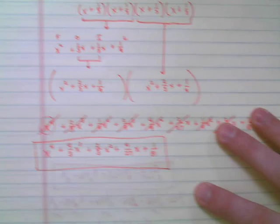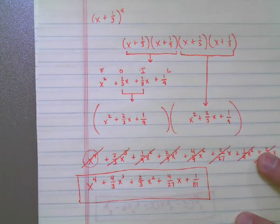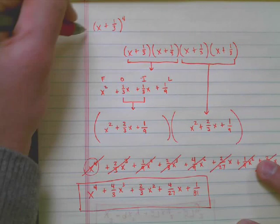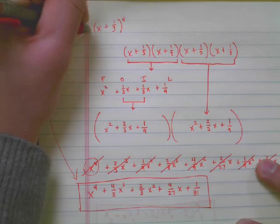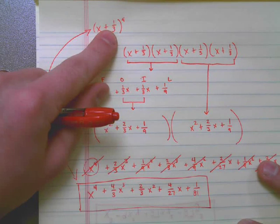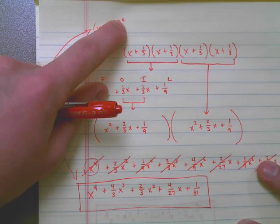What we're really saying, then, is that x plus one-third to the fourth power, this is the same thing as this long expression at the bottom. And that's how you would expand a binomial, not only with a fraction in it, but to the fourth power, so even greater than three.